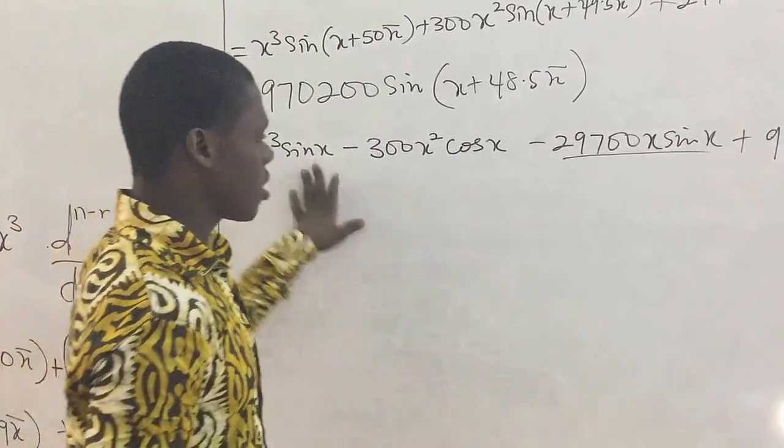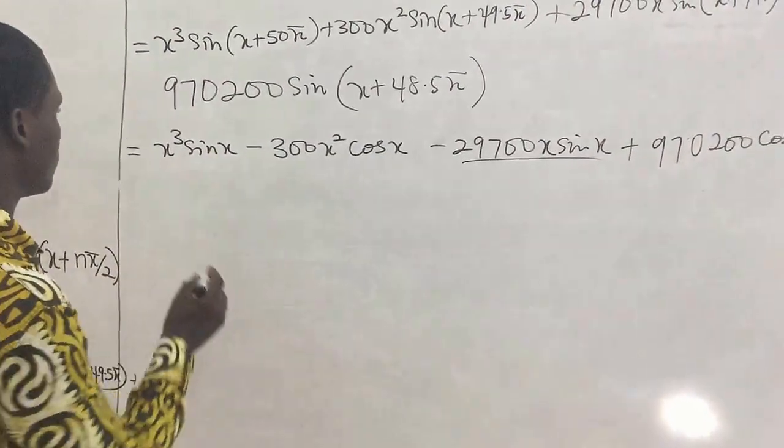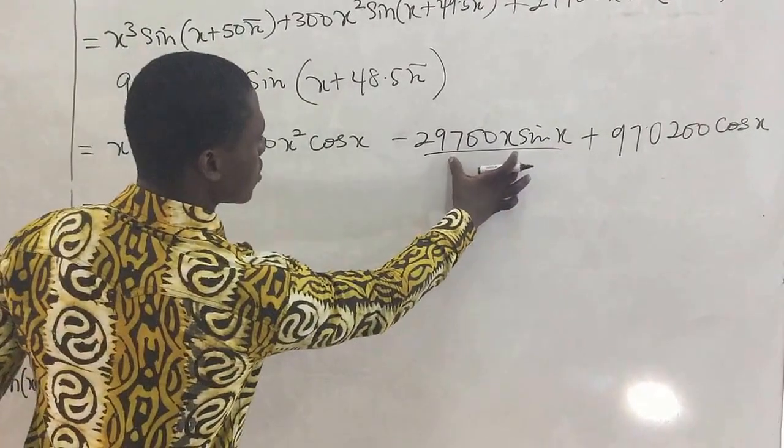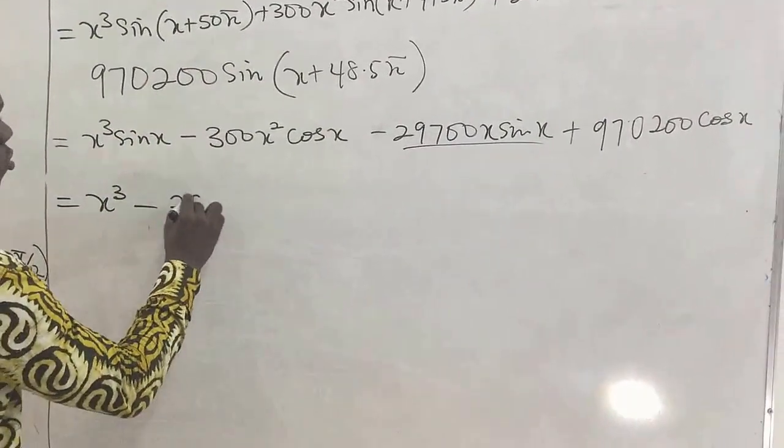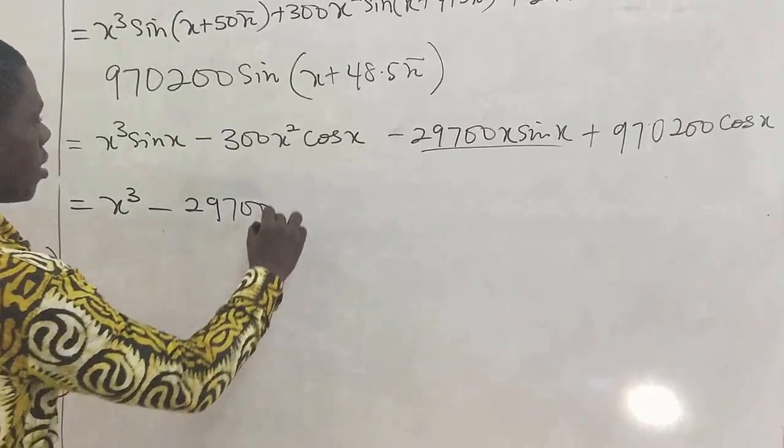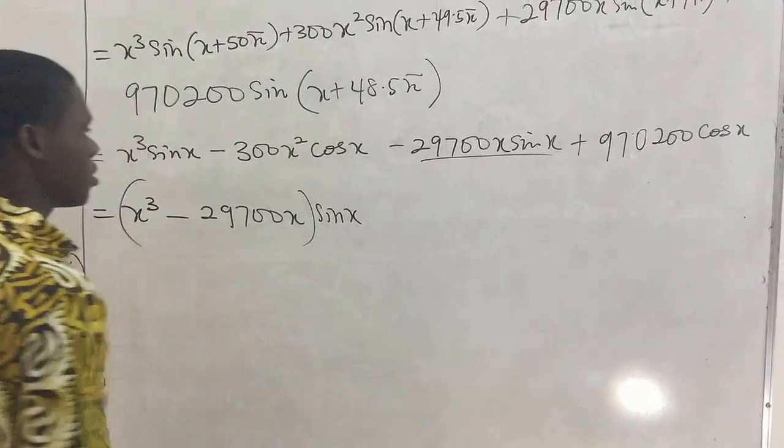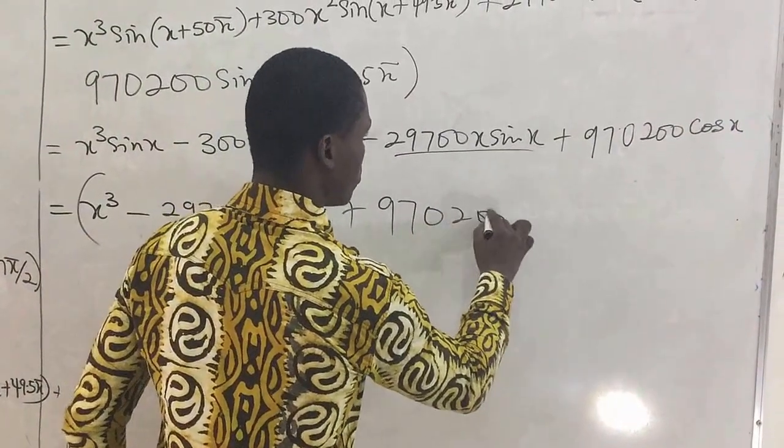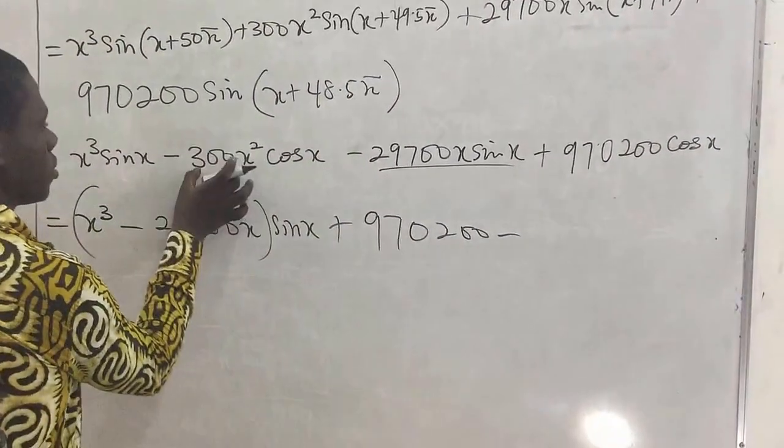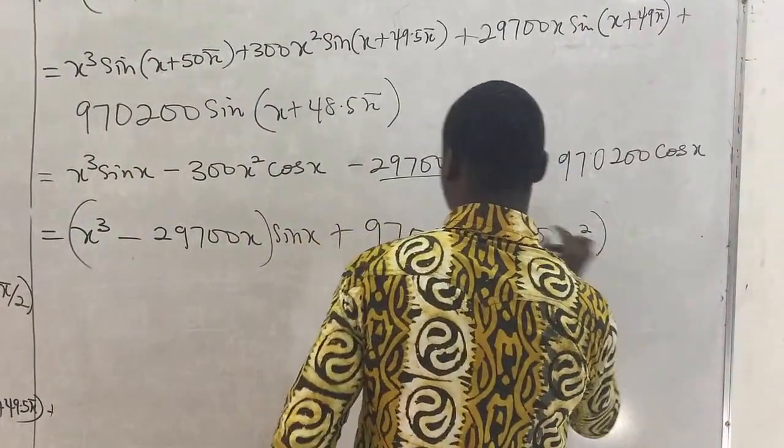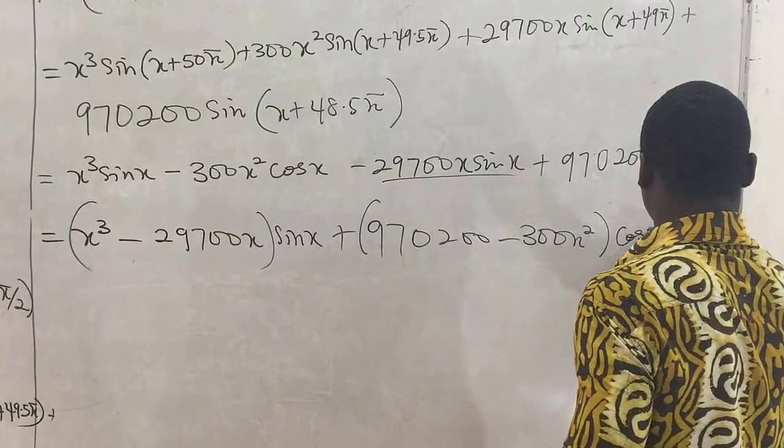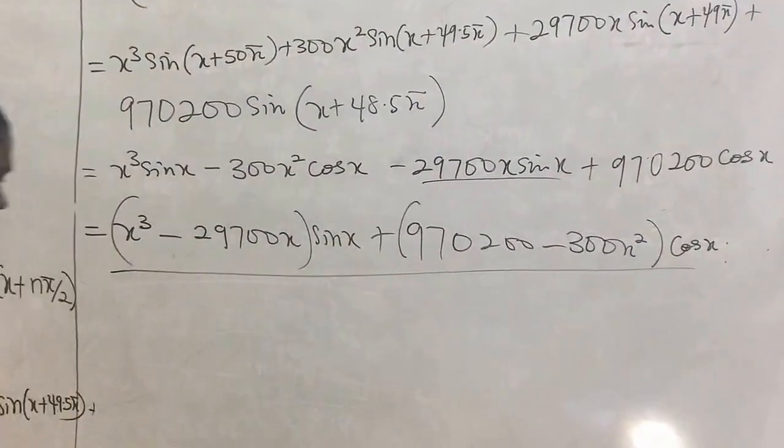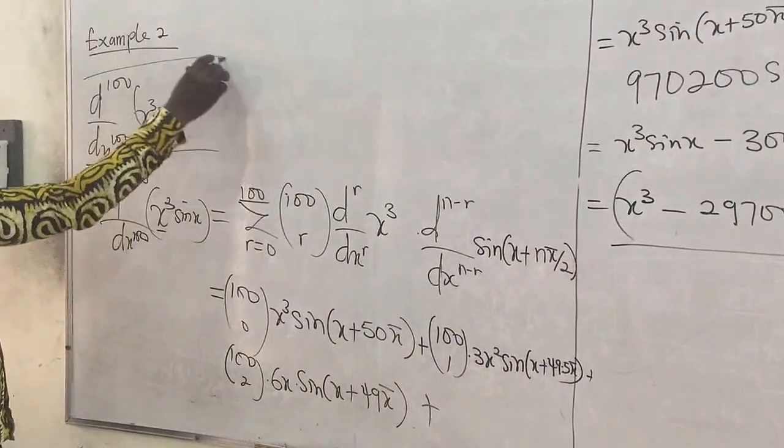So we try to put the sines together and those with a positive together. So when we come here, we have this to be x cubed. There is sine here. So let's see where we also have sine. We have sine here. So we have minus 29700 x, so all this sine x. And plus 970200, and minus 300 x squared cos x. This gives us the 100th derivative of this product of functions.